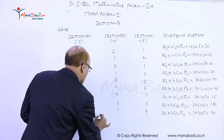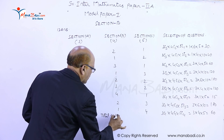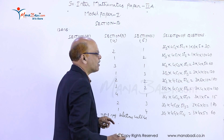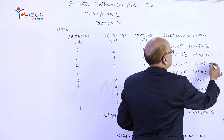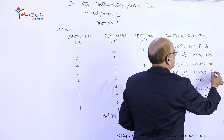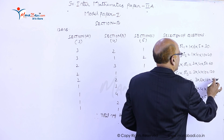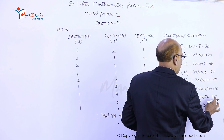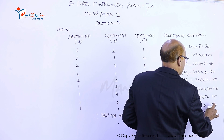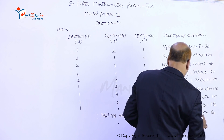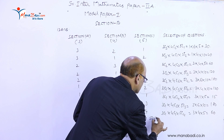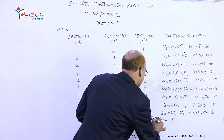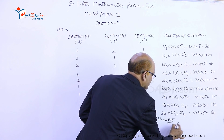Therefore, the total number of selections will be: add all these numbers. 30 plus 40 is 70, plus 60 is 130, plus 120 is 250, plus 180 is 430, plus 120 is 550, plus 15 is 565, plus 180 plus 60 equals 805. So the total number of selections is 805. That is the answer.